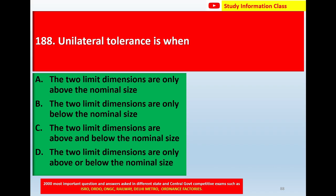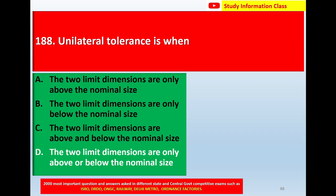Next, question number 188: Unilateral tolerance is when — option A: the two limit dimensions are only above the nominal size, option B: only below the nominal size, option C: both above and below the nominal size, option D: only above or below the nominal size. The correct answer is option D: only above or below the nominal size.